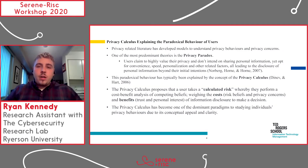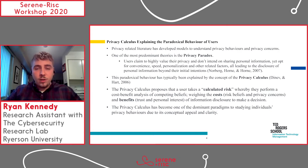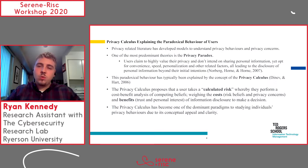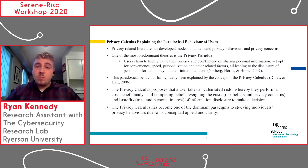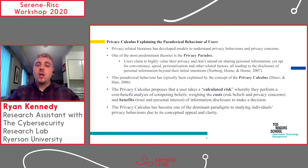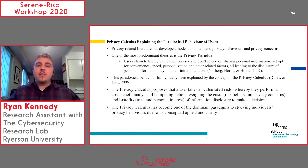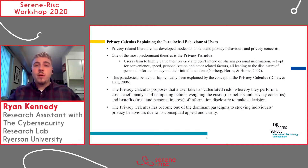Within the privacy literature, there are theories and research examining this phenomenon. One of the most predominant theories is the privacy paradox, which says that individuals generally express a high concern for their privacy, yet when you look at their actual behaviors, they're disclosing much more than they had intended. It's the classical: I believe I'm really private, I value my privacy, but my actions are not consistent with that — therefore, it's paradoxical. Another theory called the privacy calculus proposes that a user takes a calculated risk where they look at the costs and risks versus the benefits of information disclosure to make that decision. The answer to the privacy paradox, according to the privacy calculus, would be that the benefits are outweighing the risks, therefore I intend to disclose.